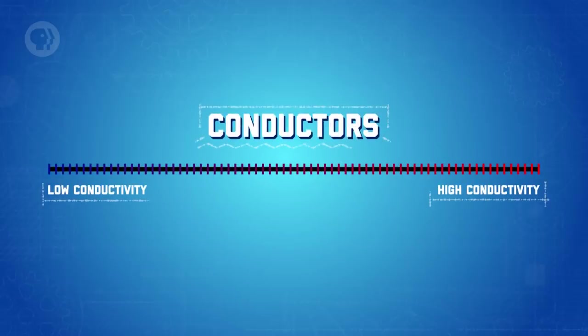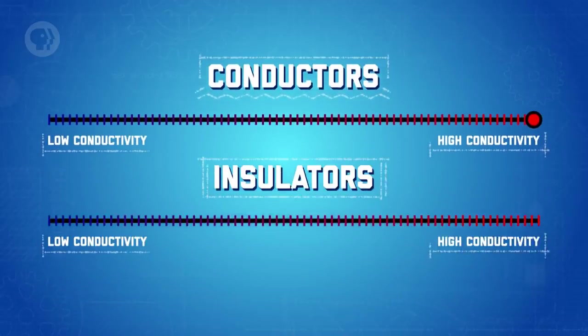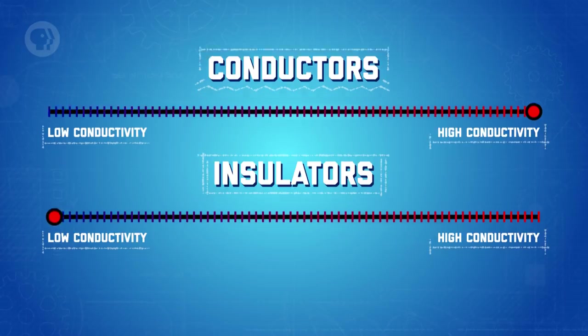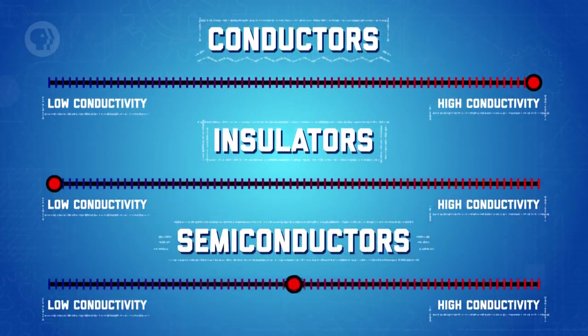In electrical engineering, we can broadly categorize materials into three types based on their conductivity: conductors, which have high conductivities; insulators, which have extremely low conductivities; and semiconductors, which are somewhere in between. For now, we'll be concentrating on the first two.